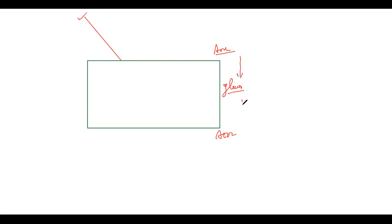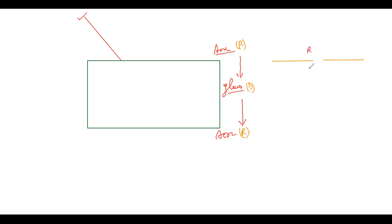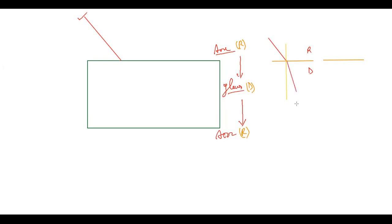Air is a rarer medium, glass is a denser medium, and air again is the rarer medium. We already studied that when a light ray goes from a rarer medium to a denser medium, the light ray bends towards the normal. I will draw it — the light ray is going to bend like this, towards its normal.